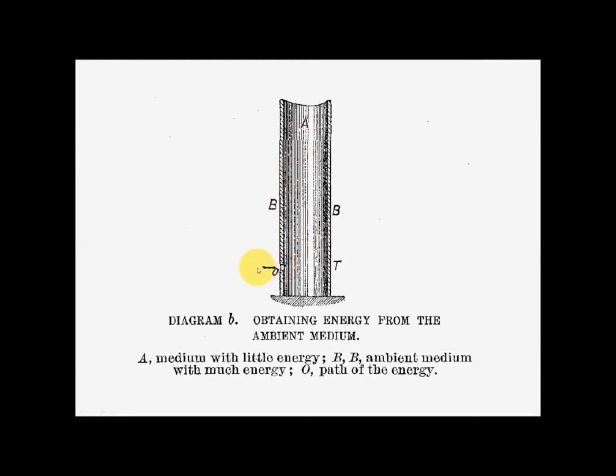So the medium, so to speak, would come through this little hole, this orifice O. He's labeled A as a medium with little energy or perhaps a low pressure. B is the ambient medium with a lot of energy, the liquid or pressurized gas outside of the tube.